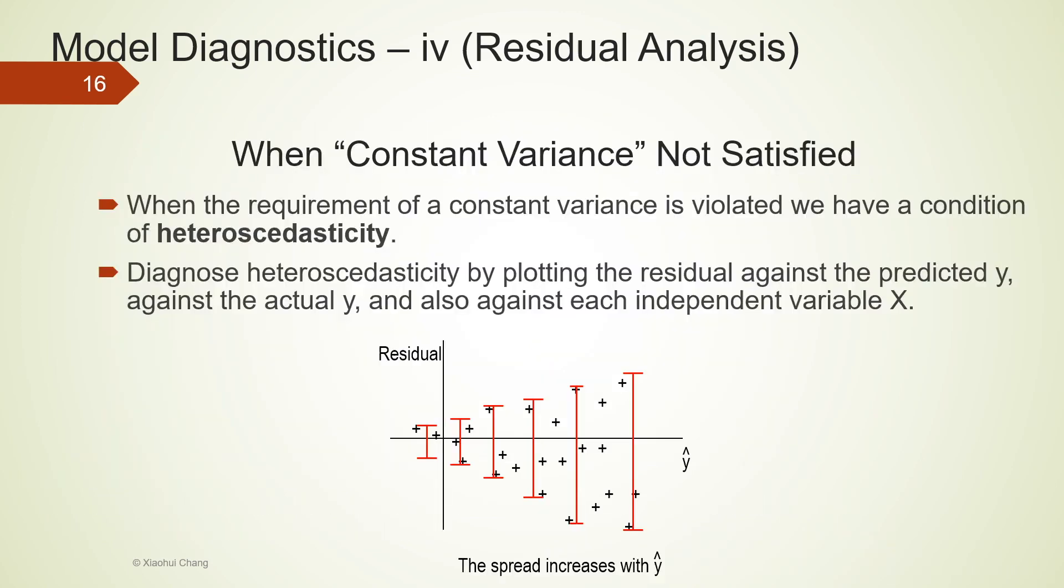When the constant variance assumption is not satisfied, we have a condition known as heteroscedasticity. To detect whether we have a constant variance, all we need to do is plot the residuals against the predicted y, against the actual y, and also against each independent variable x. Over here, I plot a toy example on this slide. The constant variance is not satisfied, as the residual spread clearly increases with the estimated y. So we do not have homoscedasticity for this toy example.